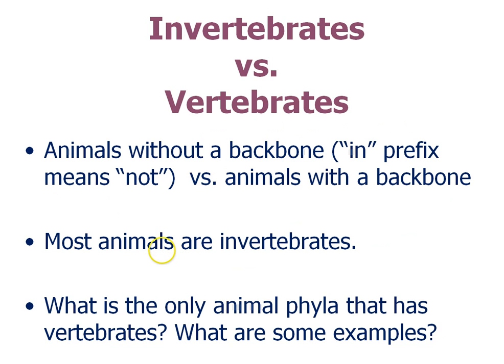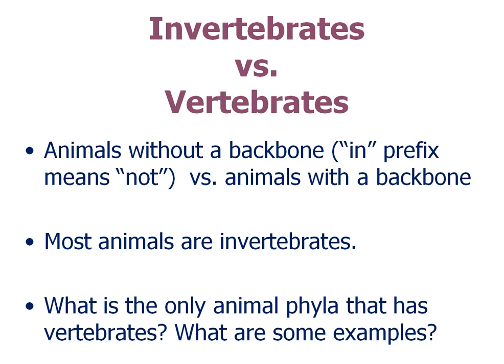Now I'm going to discuss some key terms in context. 'In' means not — so invertebrates are animals without vertebrae or bones surrounding their spinal cord, animals without a backbone. Most animals are invertebrates. The only animal phylum that has vertebrates is the chordates, with examples like fish, reptiles, amphibians, mammals, and birds. Turn to your partner and explain the difference between invertebrates and vertebrates.